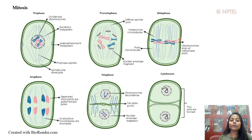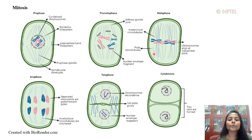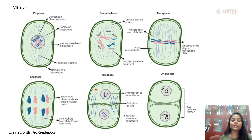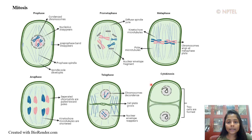During metaphase, chromatids get aligned at the metaphase plate and some mitotic spindles attach to the kinetochore of the chromatids — these are called kinetochore microtubules — while the free microtubules are referred to as polar microtubules. After metaphase comes anaphase, where chromatids are separated and pulled towards the pole by shortening of the kinetochore microtubules. This leads to telophase, marked by cell plate growth, chromosome decondensation, and nuclear envelope reappearance, ultimately leading to cytokinesis and formation of two new daughter cells.